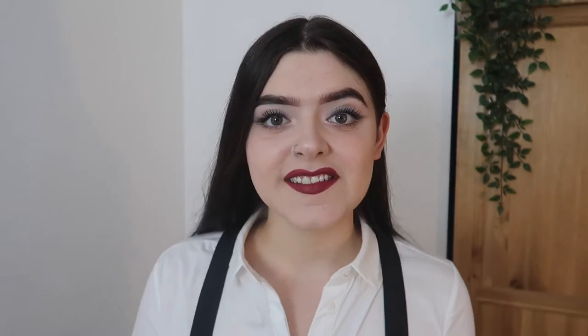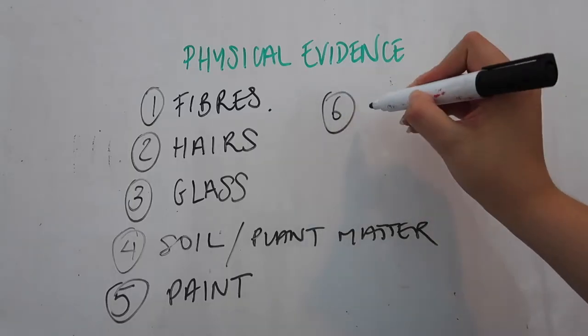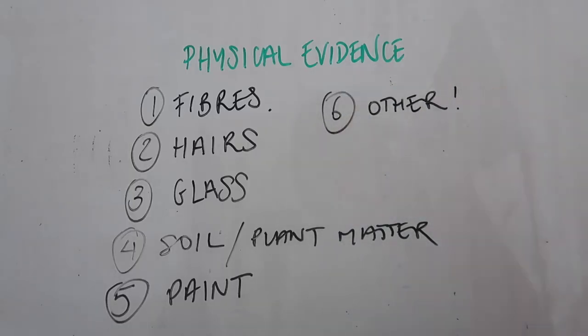Lastly, we have other things — this can refer to literally anything that can be packaged or found in a crime scene that could be deemed evidence. This includes anything that can be swabbed, since swabs are physical. We are referring to blood, bodily fluids, petrol, drink — anything. CSIs also love glitter; glitter is an excellent piece of forensic physical evidence because it gets everywhere. On to the second group: trace evidence.